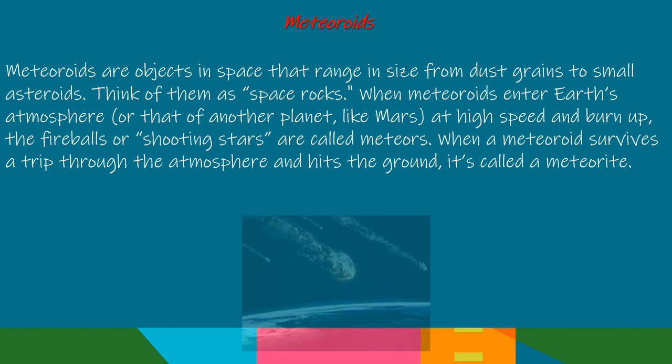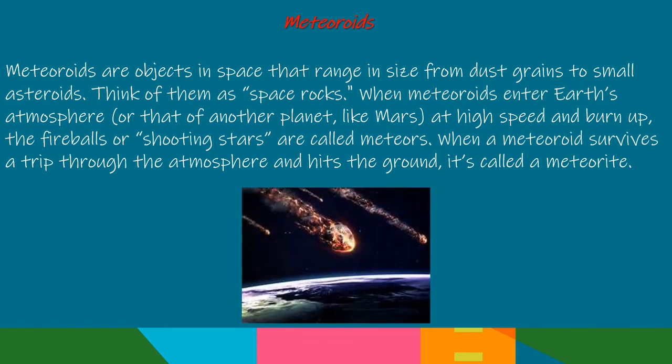Meteoroids are objects in space that range in size from dust grains to small asteroids — think of them as space rocks. When meteoroids enter Earth's atmosphere or that of another planet like Mars at high speed and burn up, the fireballs or shooting stars are called meteors. When a meteoroid survives a trip through the atmosphere and hits the ground, it's called a meteorite.